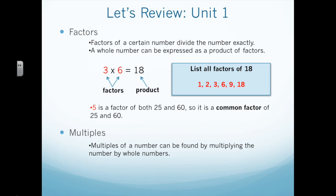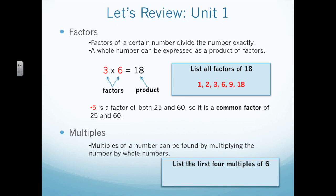Multiples of a number can be found by multiplying the number by whole numbers. If I were to list the first 4 multiples of 6, they would be 6, 12, 18, and 24. 60 would also be a multiple of 6, since 6 times 10 equals 60. 120 would also be a multiple of 6, since 20 times 6 equals 120.